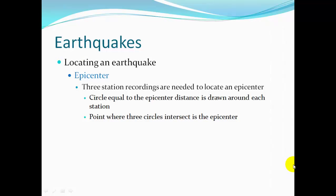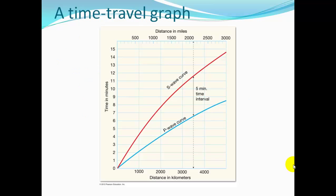You need at least three station recordings to locate an epicenter. You look at the time between the P wave arrival and the S wave arrival, convert that to distance, and draw a circle of that distance around each station. Where those three circles meet is the epicenter. To get that conversion from time to distance, you use a time-travel graph, which has a P wave curve and a slower S wave curve.